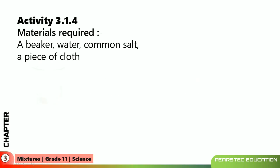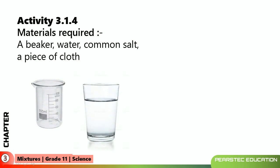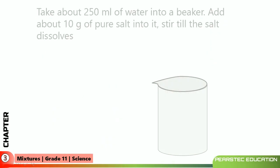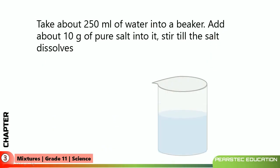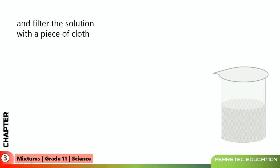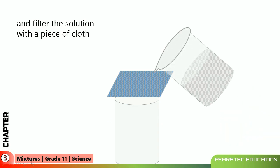Let's do another activity. Here we are going to take a beaker, water, common salt, and a piece of cloth. Take about 250 ml of water into a beaker and add about 10 grams of pure salt, then stir it until the salt dissolves well. The salt is gone and mixed well with the water. Filter the solution with a piece of cloth as we did before.